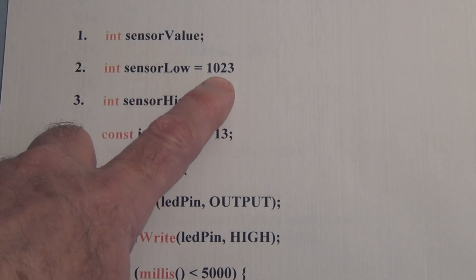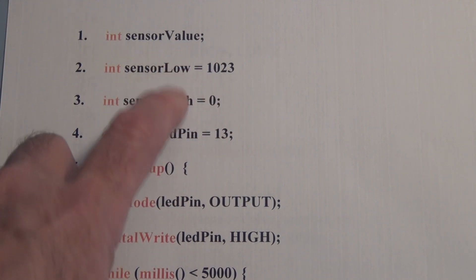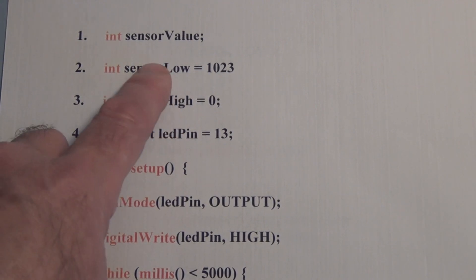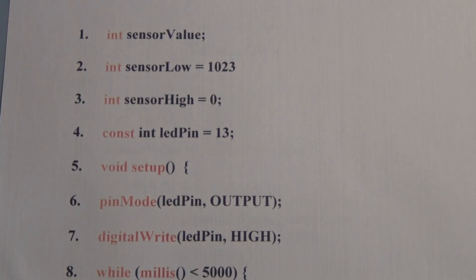Now the maximum digital value out of the analog to digital converter is 1023 and the minimum digital value is zero. So these may seem at first to be reversed, but this is part of the algorithm and hopefully I can explain why we do this in order to solve the problem with calibrating to the existing light.